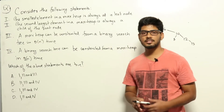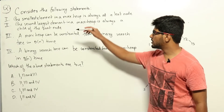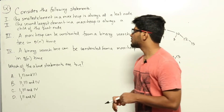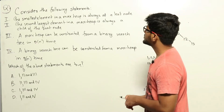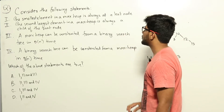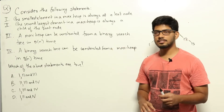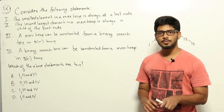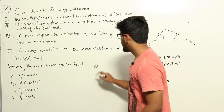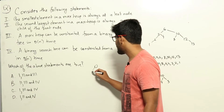This is a question from data structures regarding max heaps. We will go through each of these statements and see which are true. Statement 1 says the smallest element in a max heap is always at a leaf node. Imagine this statement is false — let's say the smallest element is at some internal node.